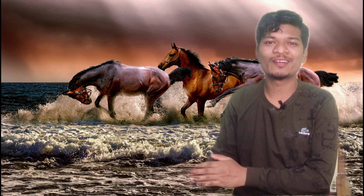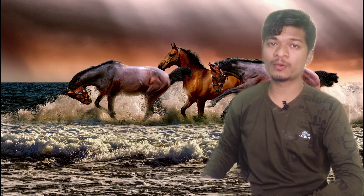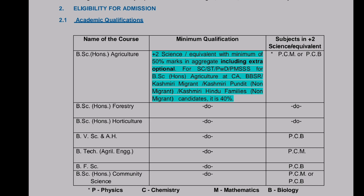Let's talk about OUAT entrance examination. The first thing is eligibility for admission. The minimum qualification is the same for all colleges: Plus 2 Science or equivalent with a minimum of 50% marks. For ST/SC, PWD, and other reserved categories, the minimum is 40% marks. If you want to take admission in Veterinary Science, the subject combination you must have is PCB — Physics, Chemistry, and Biology.